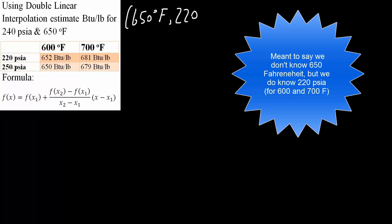In order to use double linear interpolation, we're essentially using linear interpolation three times. I'll show you what I mean. One piece of information we can find is 650°F for 220 PSI. We don't know 650°F, but we do know 220 PSI, so we can do a simple linear interpolation. Let's do that.